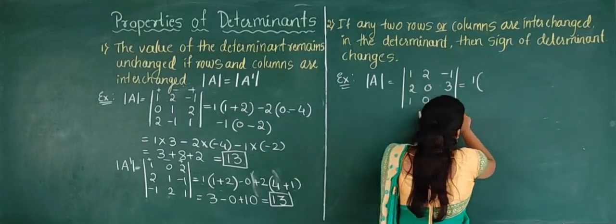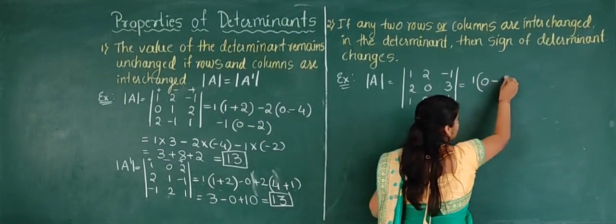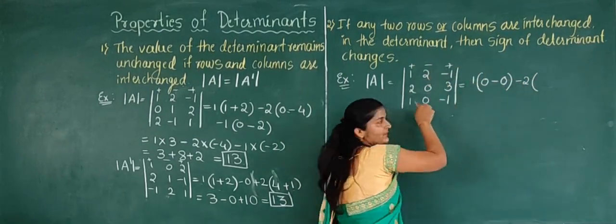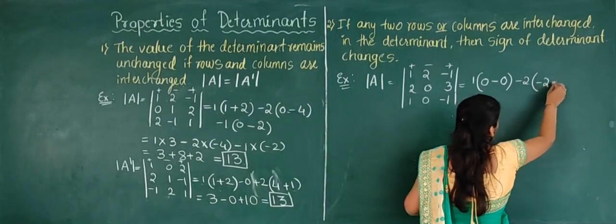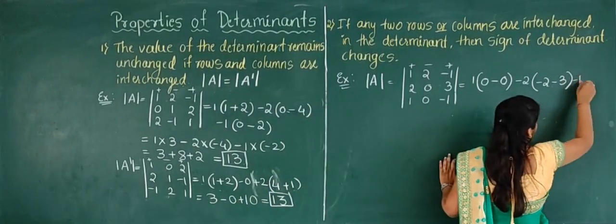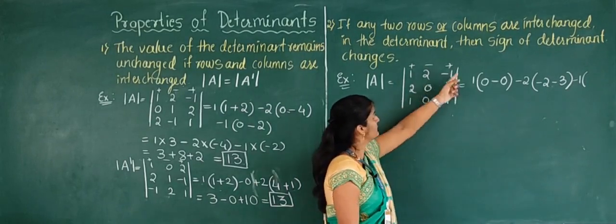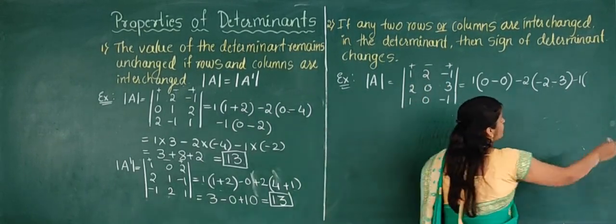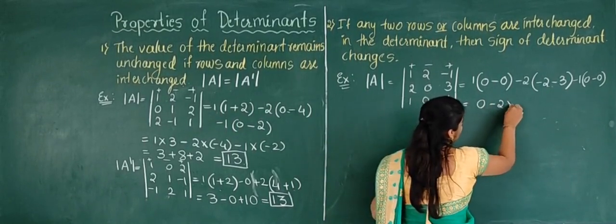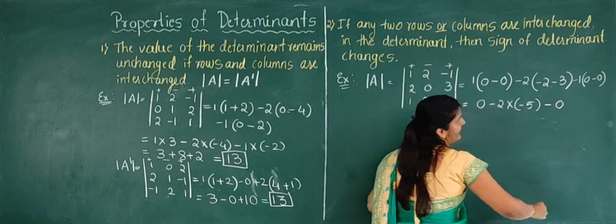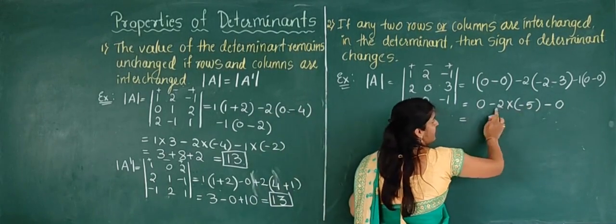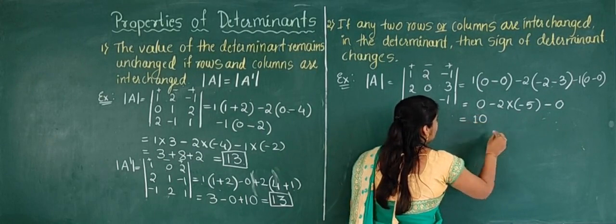Finding the value of this determinant using the first row: 1 into (0×(−1) − 3×0) minus 2 into (2×(−1) − 3×1) plus (−1) into (2×0 − 0×1). This gives: 1×0 − 2×(−2−3) + (−1)×0 = 0 − 2×(−5) + 0 = plus 10. So the determinant of A equals 10.